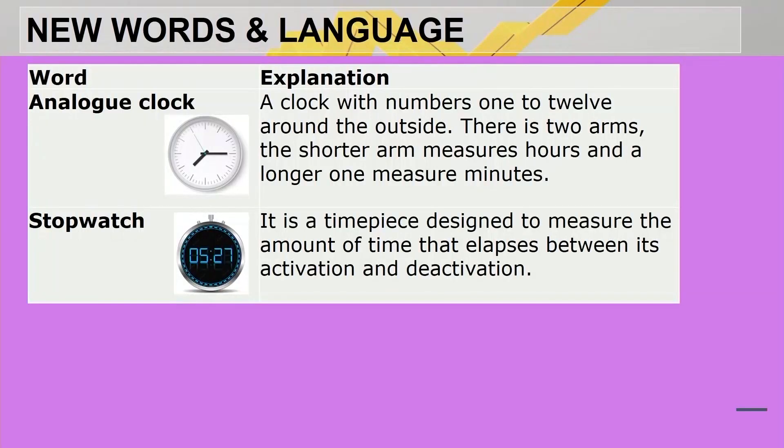Let's look at the new words that we will be working with. Analog clock, that is a clock with numbers, one to 12 around the outside. There's two arms. The shorter arm measures the hours and a longer one that measures the minutes.